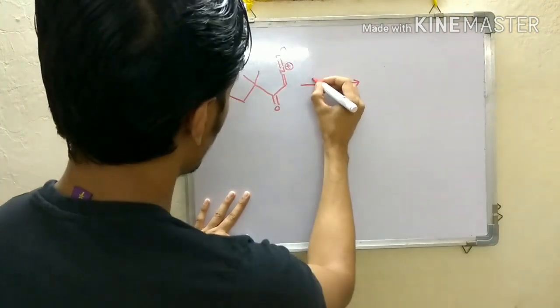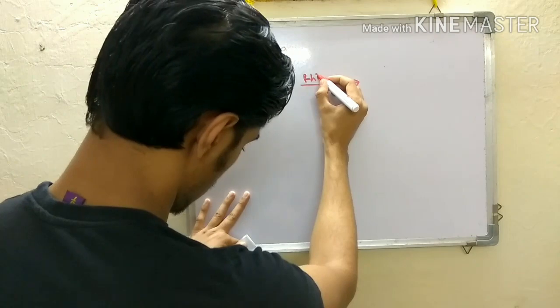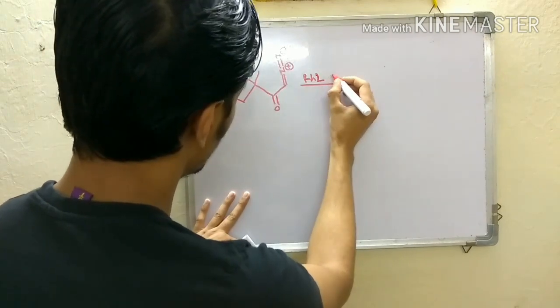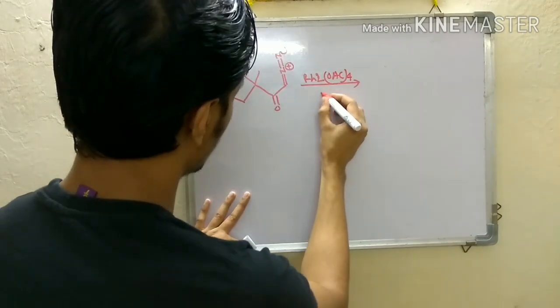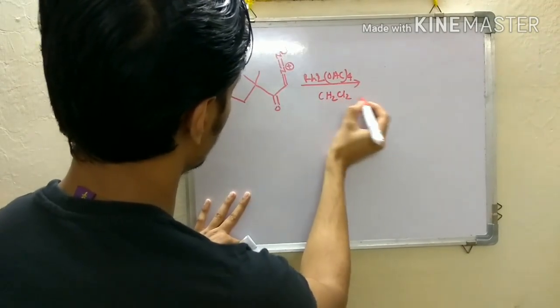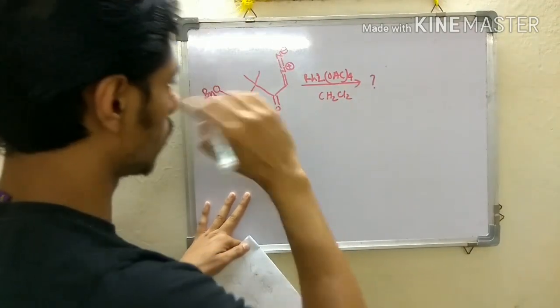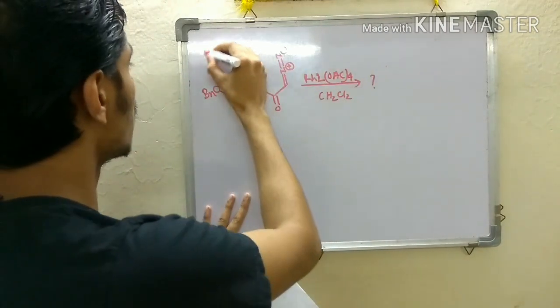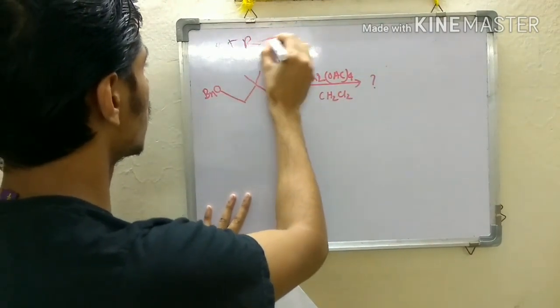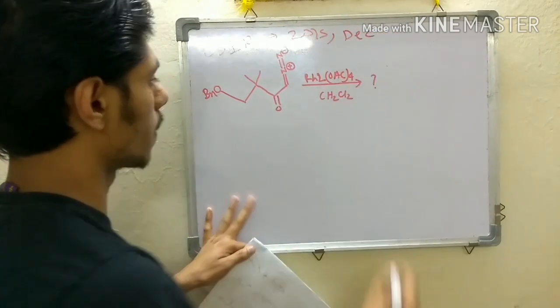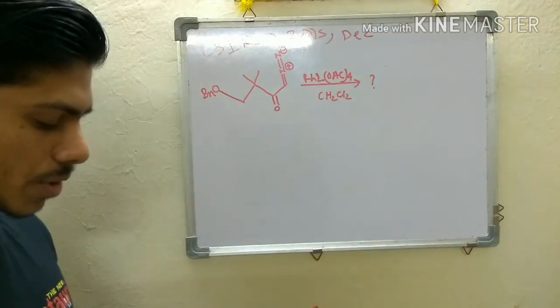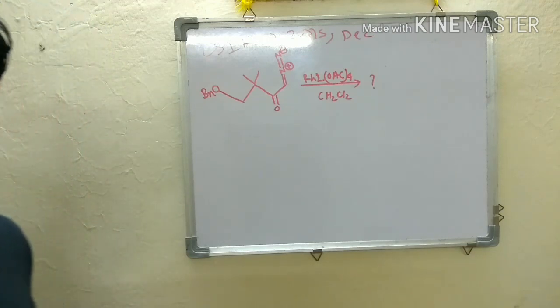So this is the compound and you have they have given rhodium 2 acetate 4, then CH2Cl2. So what will be the product? And this question is from CSIR NET 2015 December.